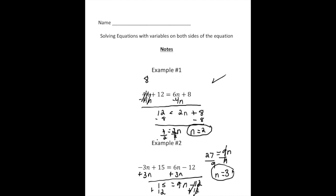And 27 divided by 9 is 3. So again, we're not quite done. Let's plug it back in and see if it works. Negative 3 times 3 is negative 9. Negative 9 plus 15 is 6. So we want this side to equal 6 also. 6 times 3 is 18. And 18 take away 12 is 6. It's right.